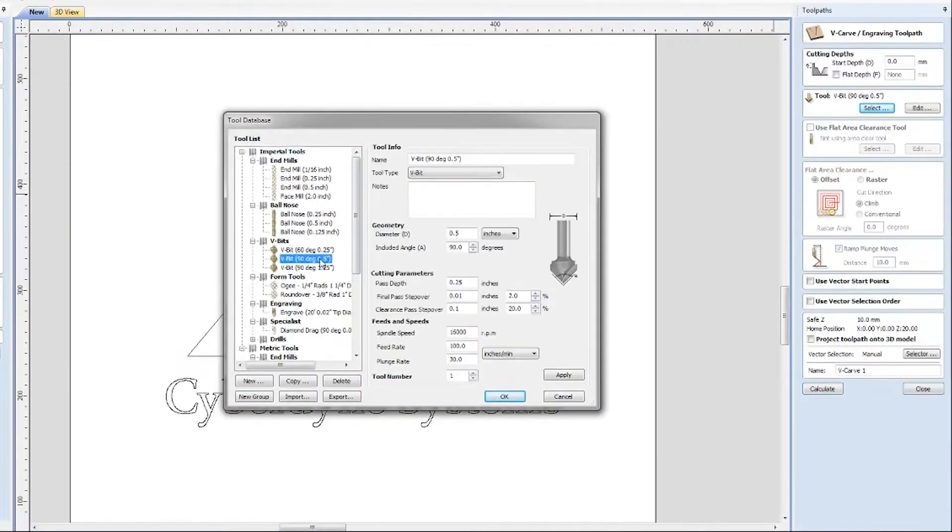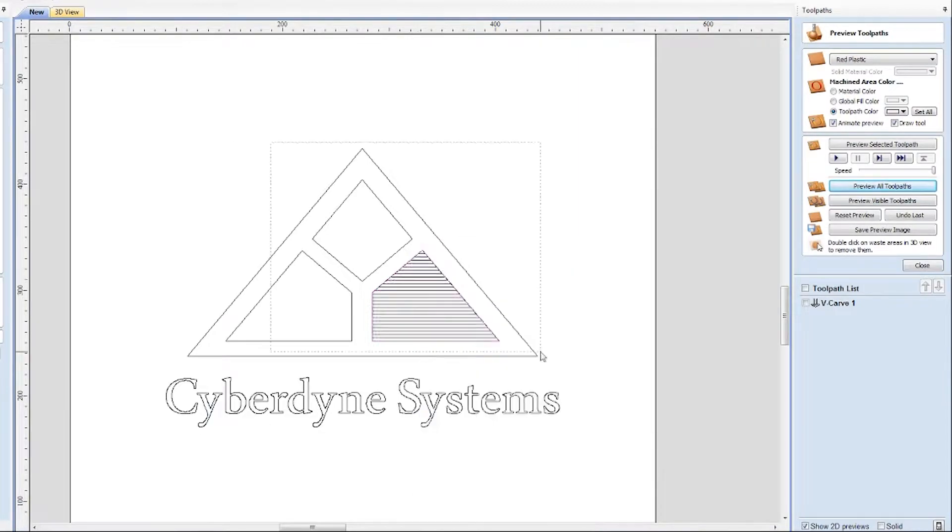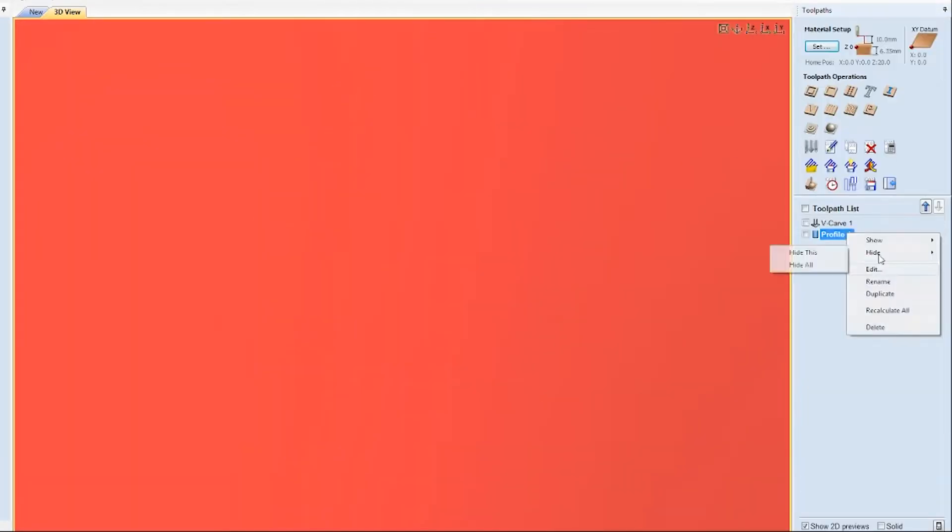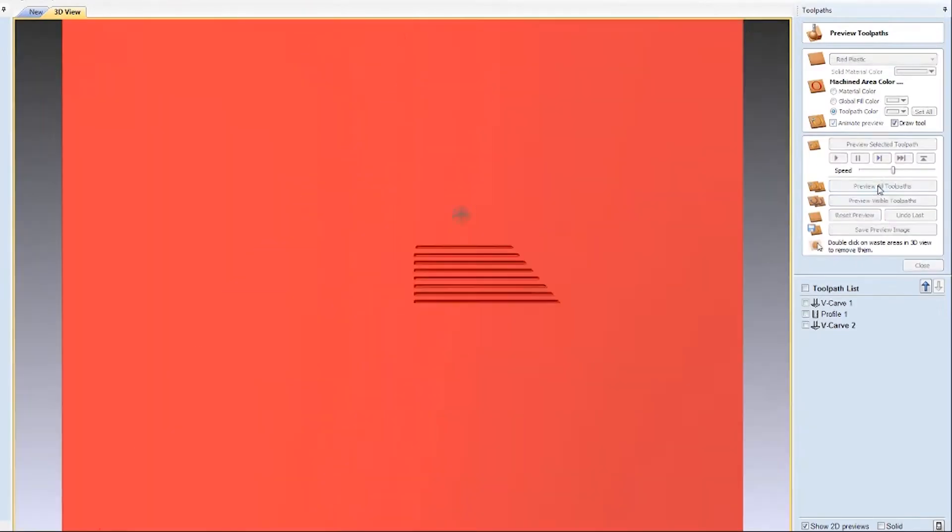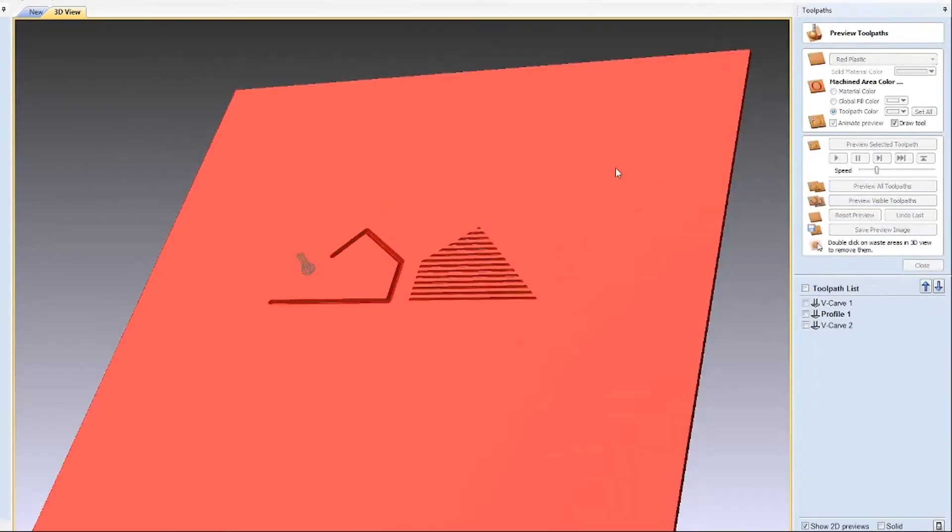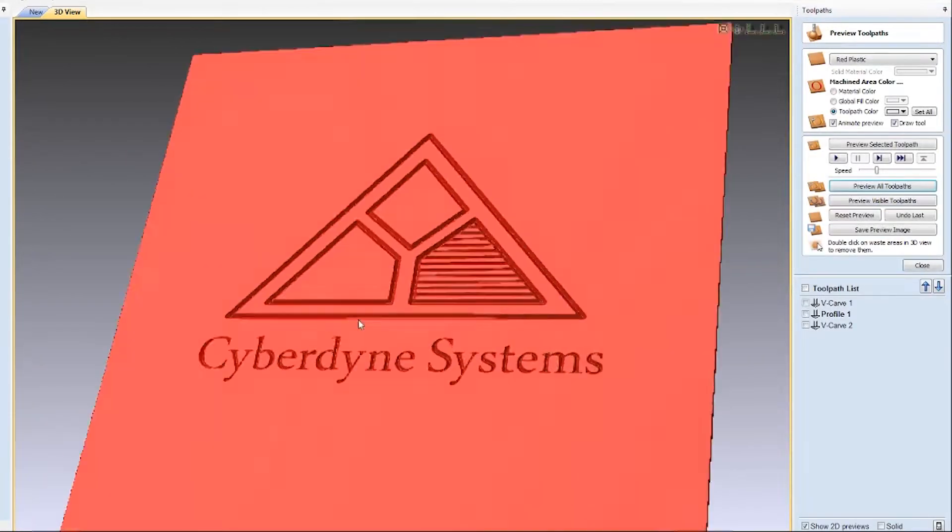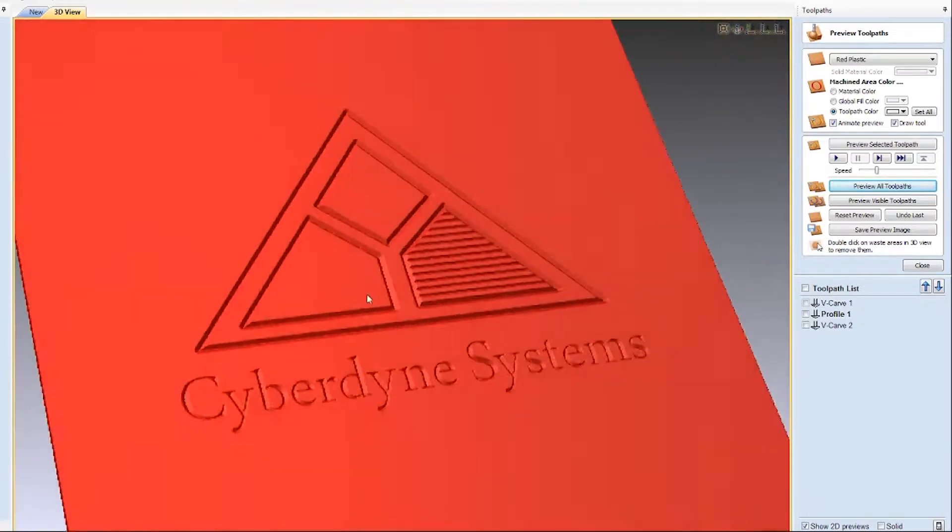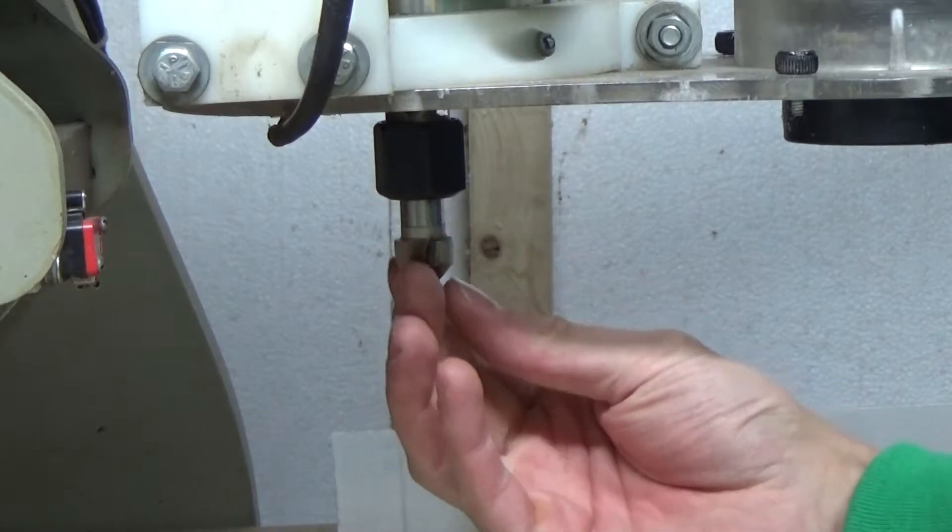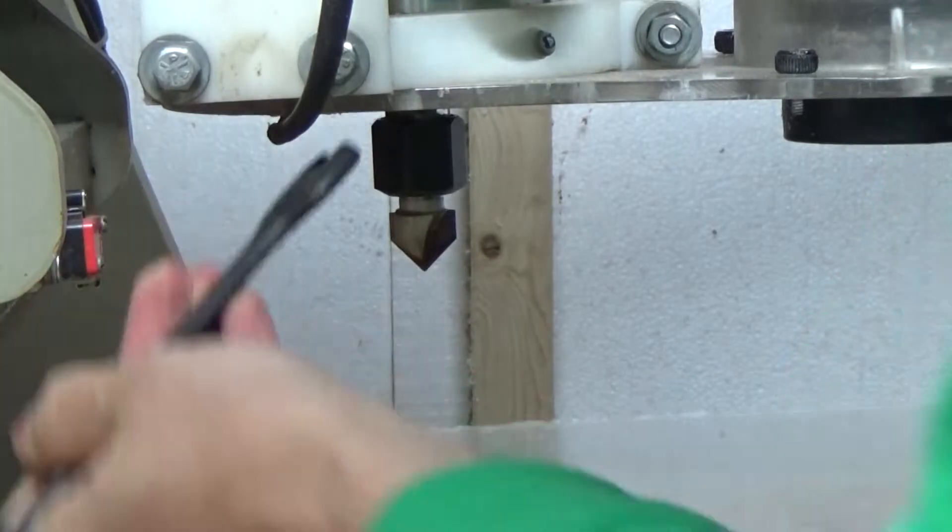Once I had the dimensions of the acrylic, I imported the logo outlines into Vectric Aspire. I generated the V-Carve toolpaths for a 90 degree V-cutter with a half inch shank.